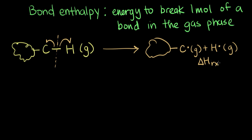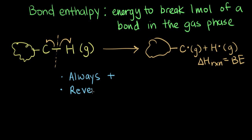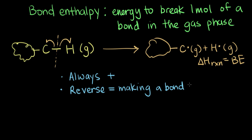The delta H of this reaction is the bond enthalpy, which I'll abbreviate as BE. Bond enthalpy is always positive — you always have to add energy to break a bond. If we take the reverse of this reaction, that means we're making a bond. Since breaking a bond always takes energy, making a bond always releases energy, so it will always be negative to make a bond.